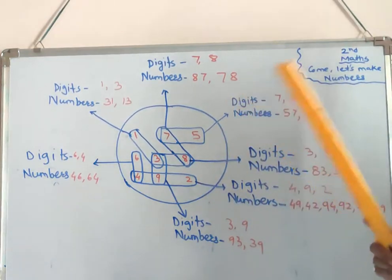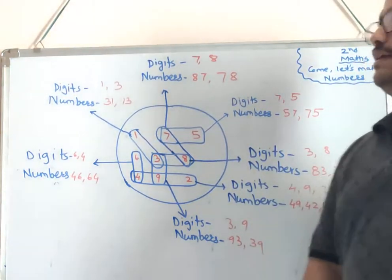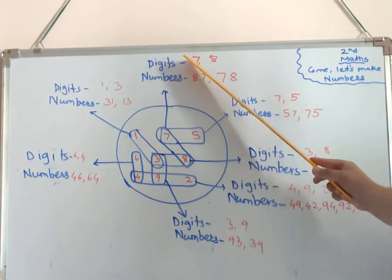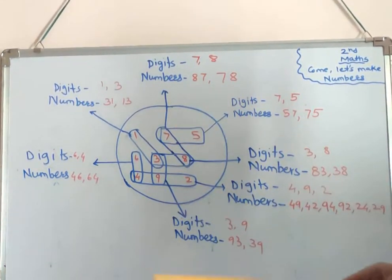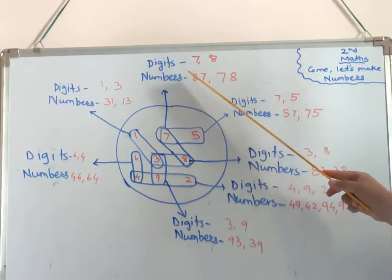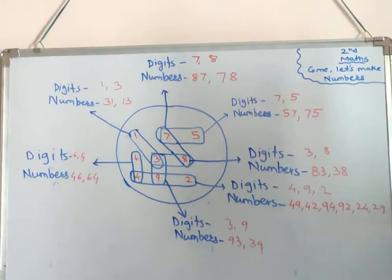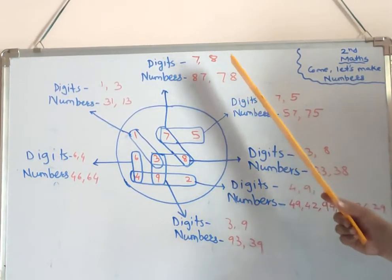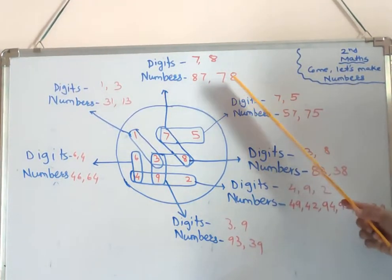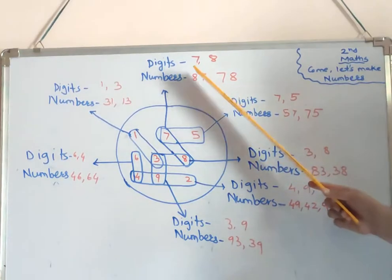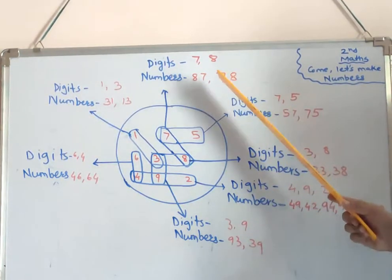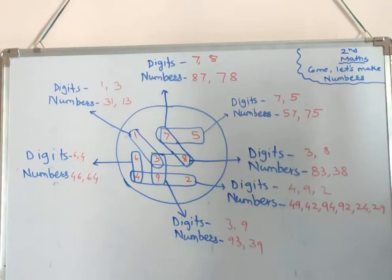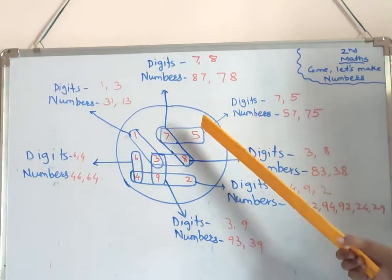You all know tens and units. First, take the first digit in the units place — that's seven — and the remaining digit eight goes to tens, giving eighty-seven. Now take the second digit eight in the units place, giving seventy-eight. So the two numbers made are 87 and 78.